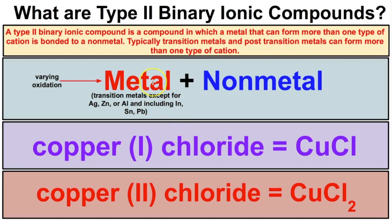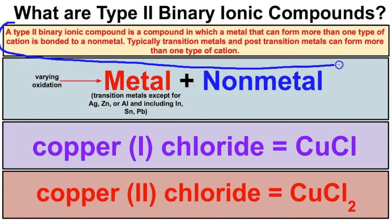In an earlier video we talked about type 1 binary ionic compounds. With type 1 you have a metal bonded to a non-metal, but this metal has to come from groups 1 or 2 and be either silver, zinc, or aluminum. With type 2 binary ionic compounds, once again you have a metal bonded to a non-metal, however that metal is going to be able to form more than one type of ion.